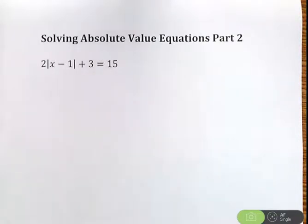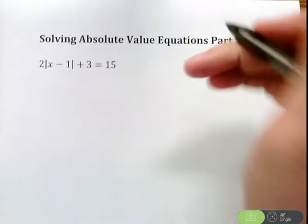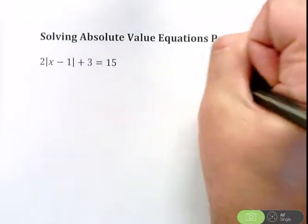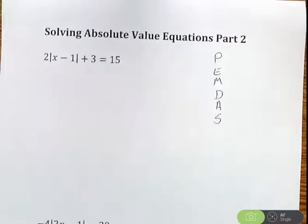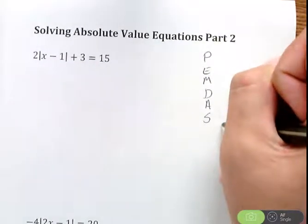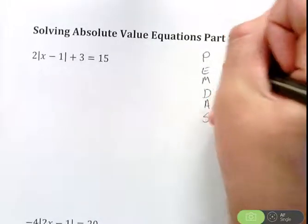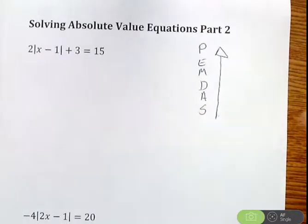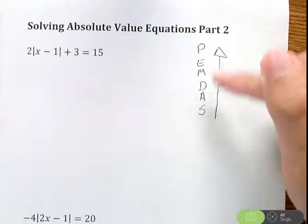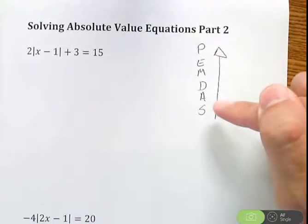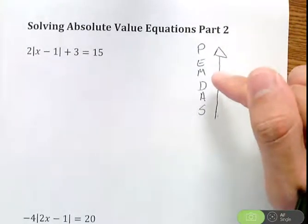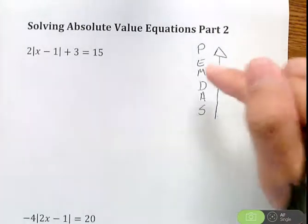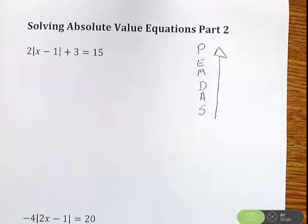Now remember, absolute values are going to act like parentheses. So when we've been solving equations, our goal is to get x by itself. But remember, the order in which we go about getting x by itself is we do PEMDAS backwards. We get rid of any addition subtraction with the x, then get rid of multiplication and division, then get rid of exponents, then work inside parentheses.